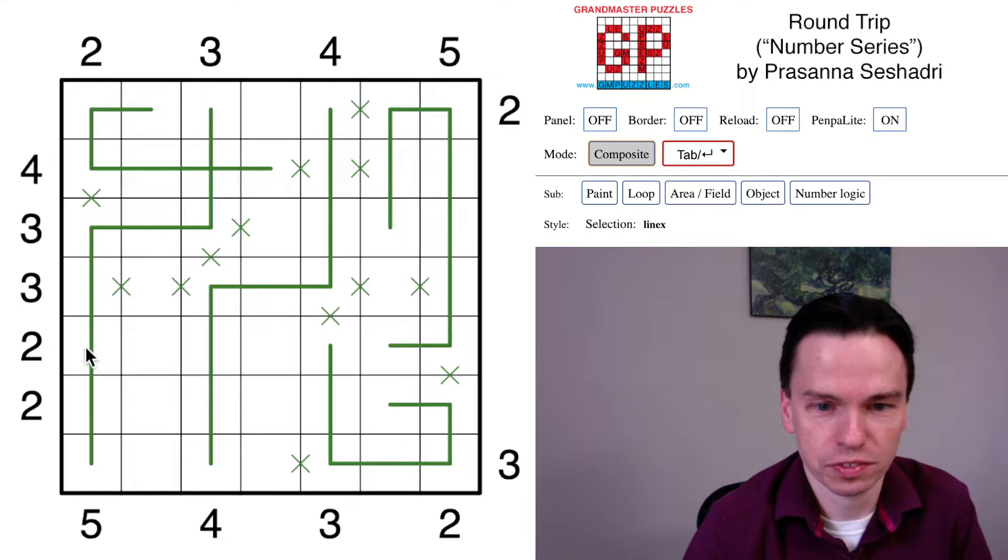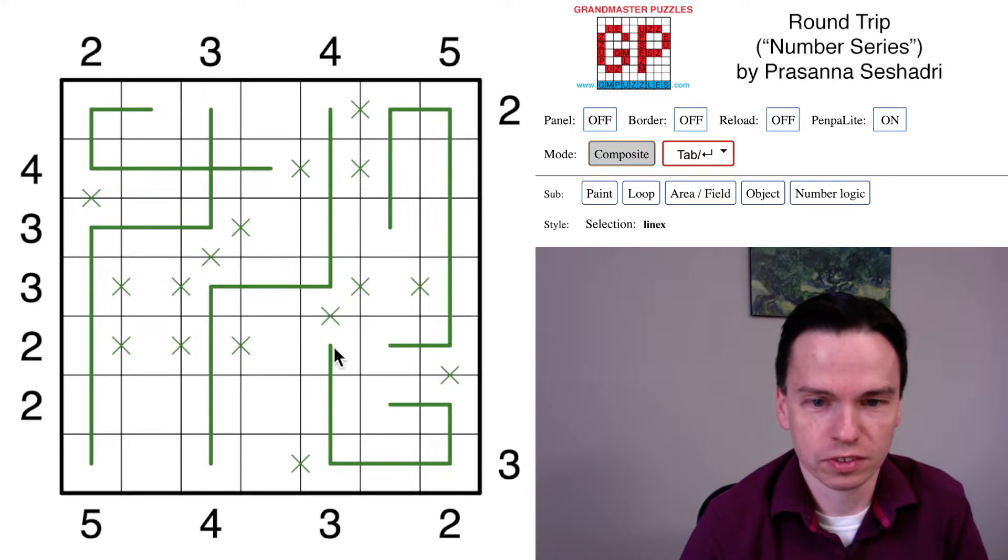For this row, this fifth row that needs a 2, it can't start in this cell and it can't come over this group because that would be 3 long, so it's going to turn from here. This, if it went to the right, would be a 3, so it comes to the left to be a 2.